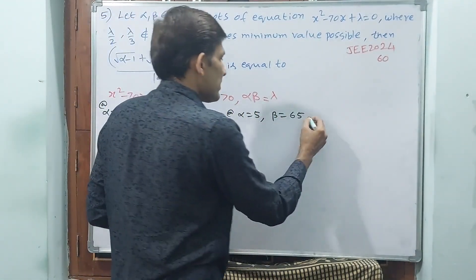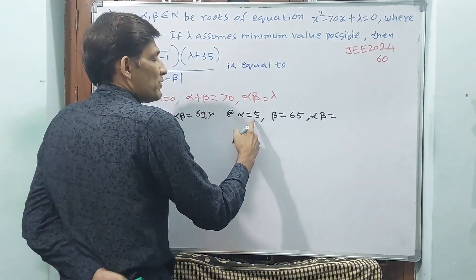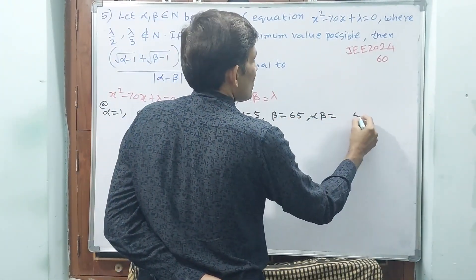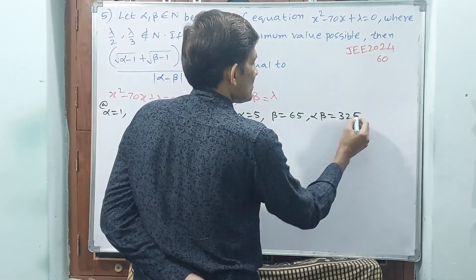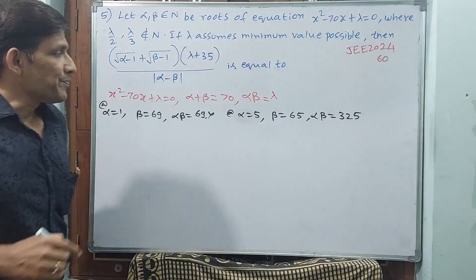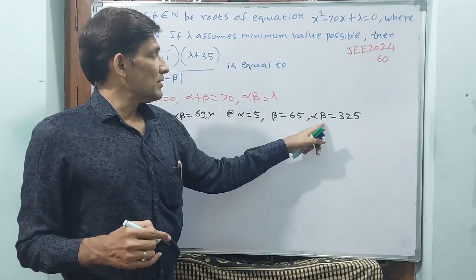Then what about αβ? 65 × 5: 5 fives are 25, 5 sixes are 30 plus 2 equals 32. So 325. Now you tell me, this is λ.